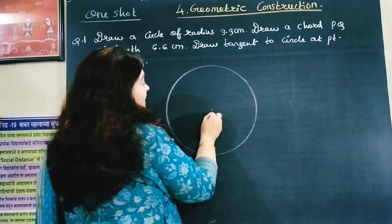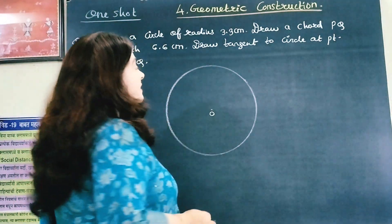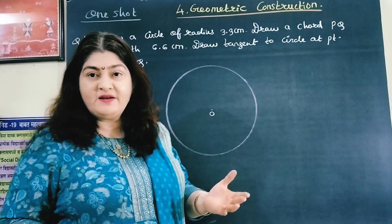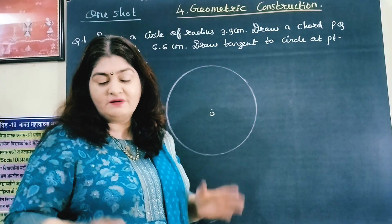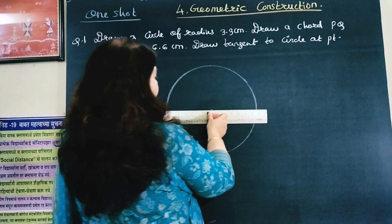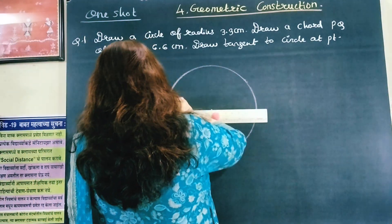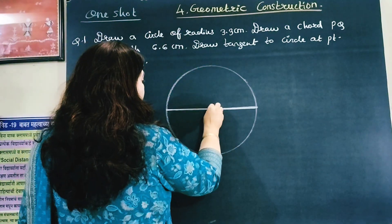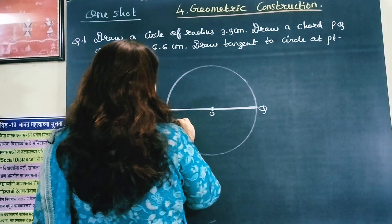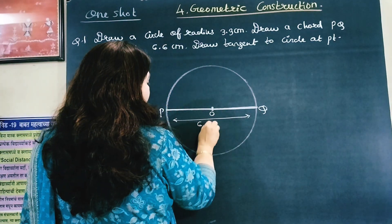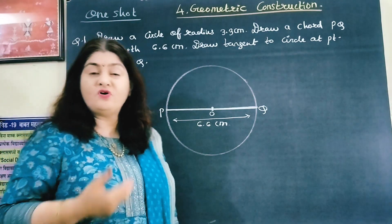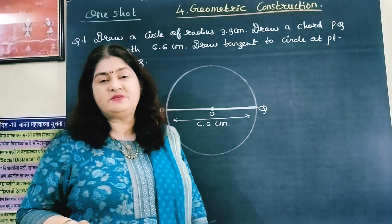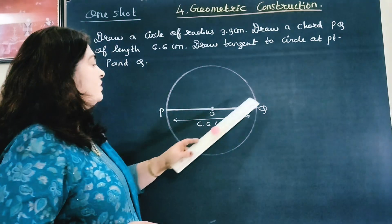The radius is 3.3 cm and the chord is 6.6 cm, so the chord is twice the radius, which means that chord is a diameter. So the diameter PQ has length 6.6 cm. The longest chord of a circle is its diameter, and here radius is 3.3 cm so diameter is 6.6 cm.